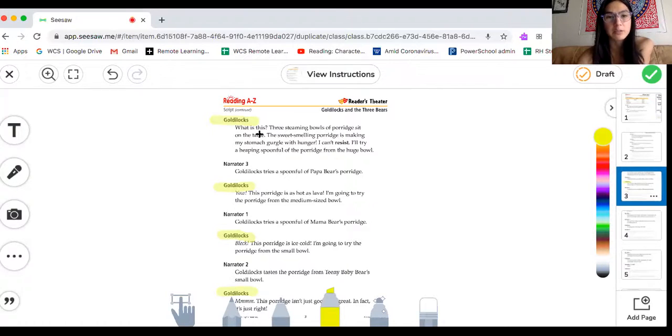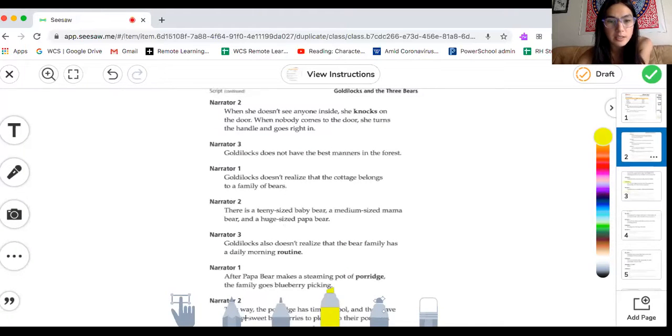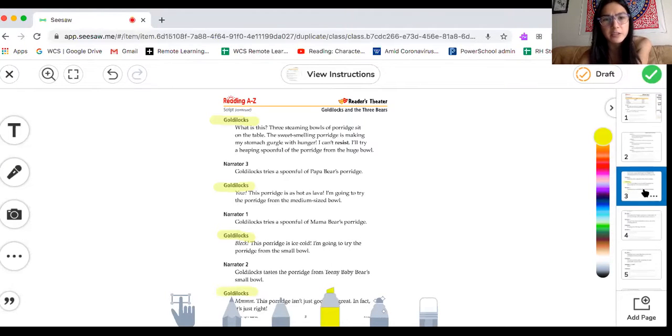Remember, you don't say your character's name. So if I'm Goldilocks and the line before I speak is down here, Narrator 2, right at the bottom. After Narrator 2 speaks, then I know that it's my turn. What is this? Three steaming bowls of porridge sit on the table. The sweet-smelling porridge is making my stomach gurgle with hunger. I can't resist. I'll try a heaping spoonful of the porridge from the huge bowl.